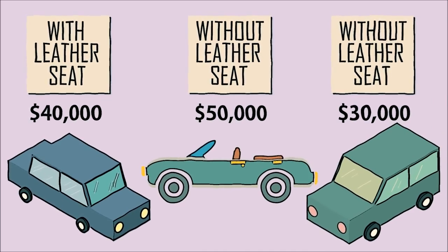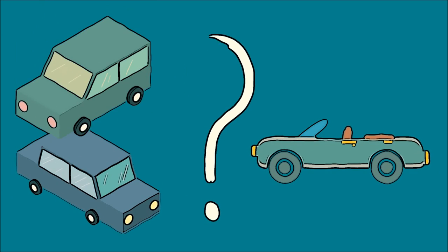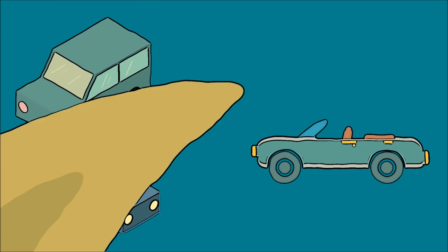But what really happened to you? Why was your decision between the first two options swayed when you were presented with the third option? And why did the car salesman show you a $50,000 car when he knew that it was more expensive and less desirable than the cars that you were considering? Well, the salesman was actually trying to use something called the decoy effect to influence your decision.